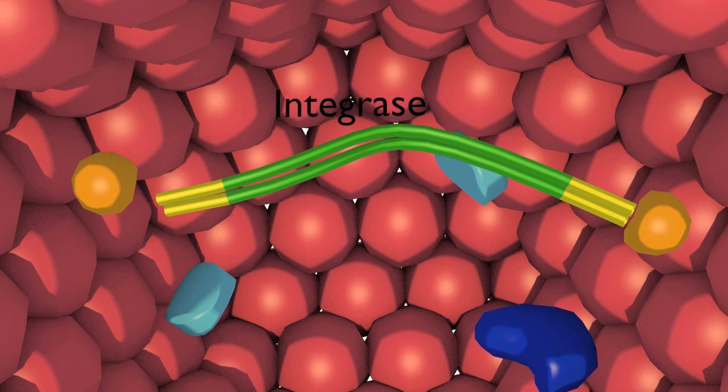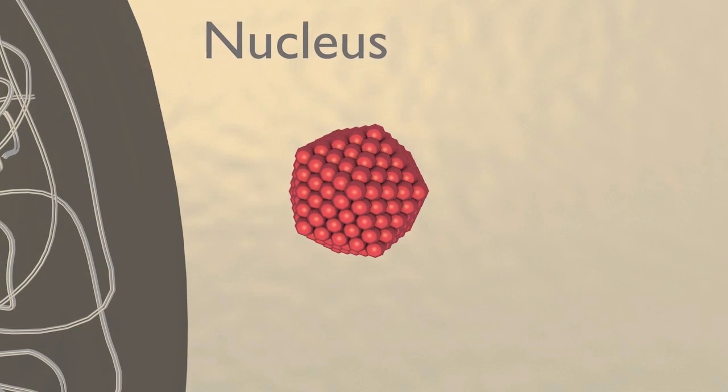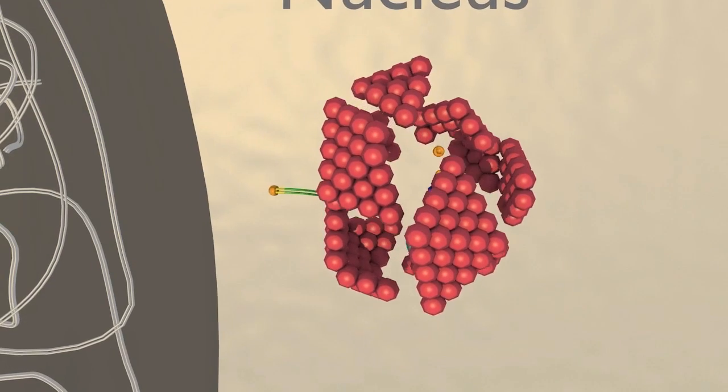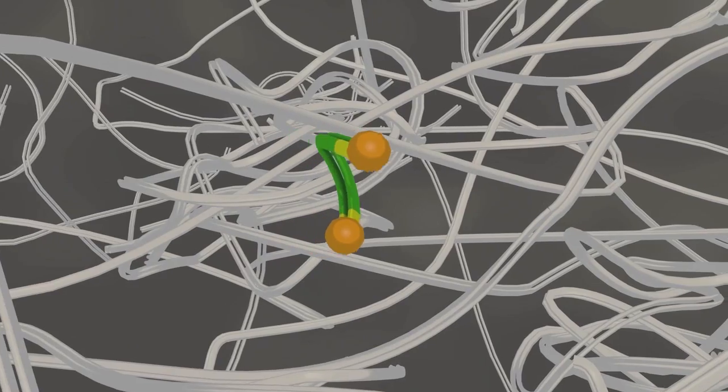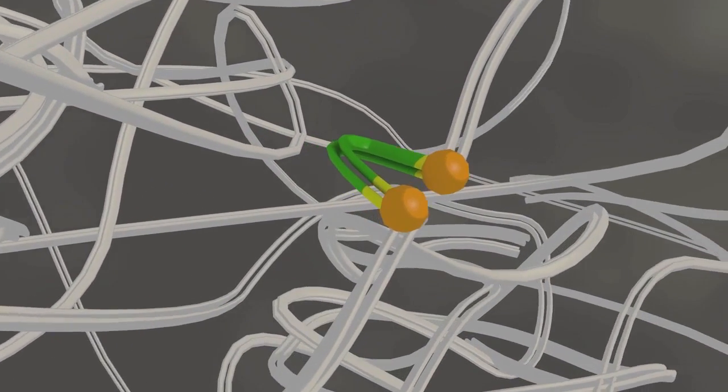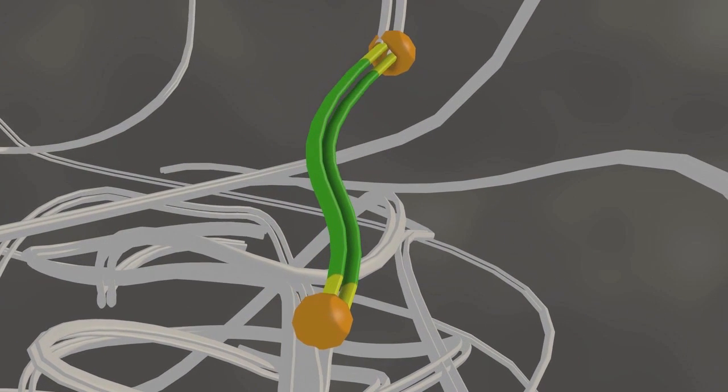The viral integrase interacts with the ends of the viral DNA. The capsid is then disassembled and the cDNA integrase complex is transported into the nucleus. The viral DNA is integrated into the host genome in a transposition reaction mediated by integrase. Once integrated, the viral DNA is called a provirus.